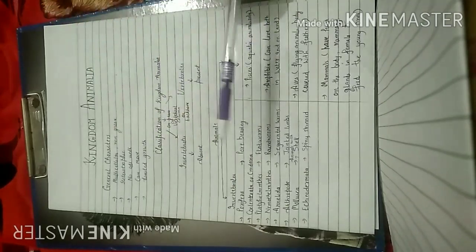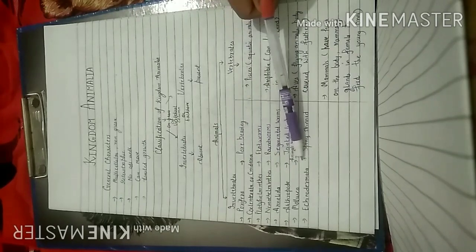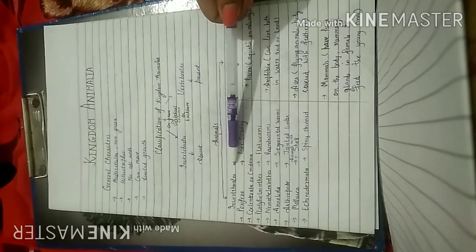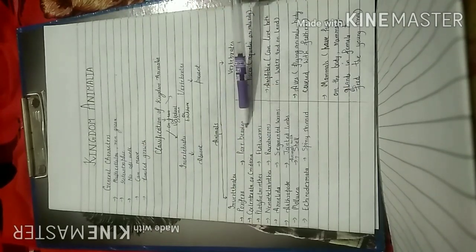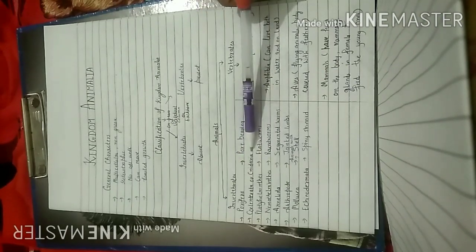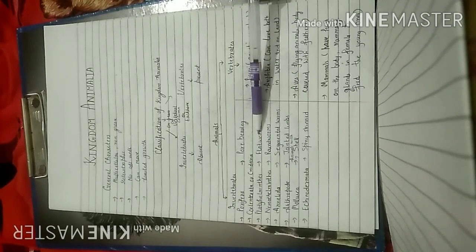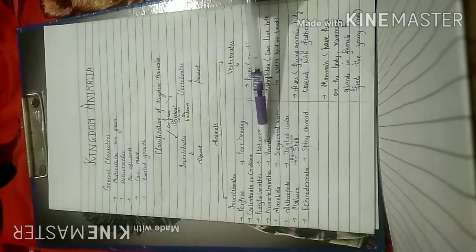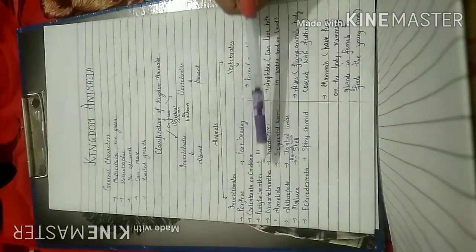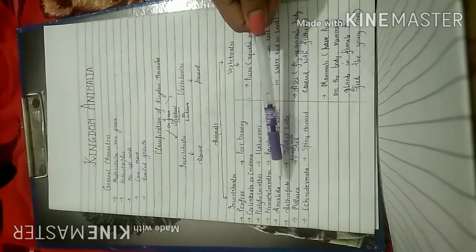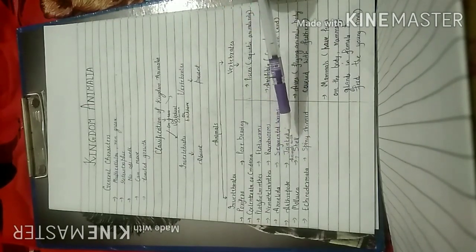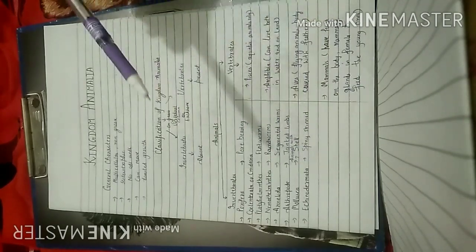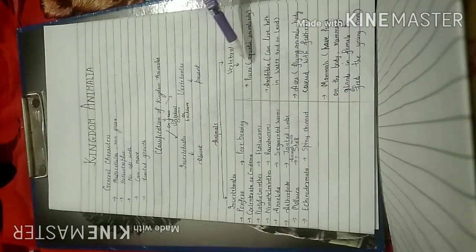The invertebrates are divided into different phylums. Let us revise their names. Number one is Porifera — consists of all animals which have pores on their body. Then Coelenterata, also known as Cnidaria. Then Platyhelminthes — these animals have a flat body, hence they are also named flatworms. Then Nemathelminths, also known as roundworms or nematodes. Then Annelida — these are the segmented worms. Then Arthropoda — animals with jointed limbs. Mollusca — animals which have a shell. And Echinodermata — they have spiny skin.